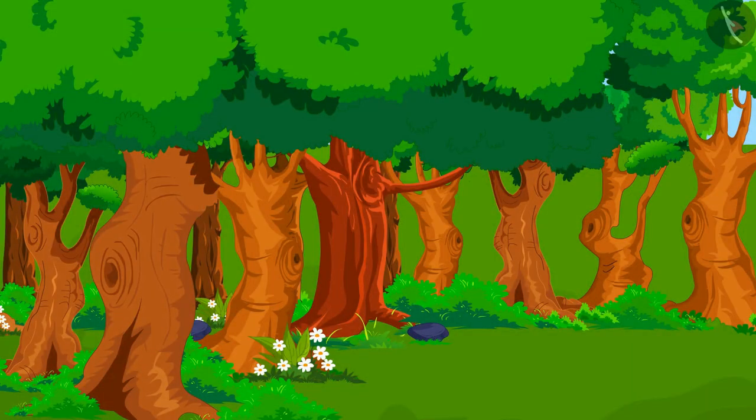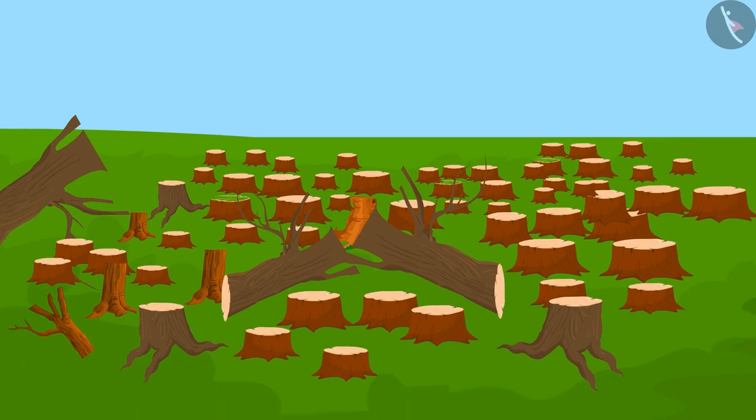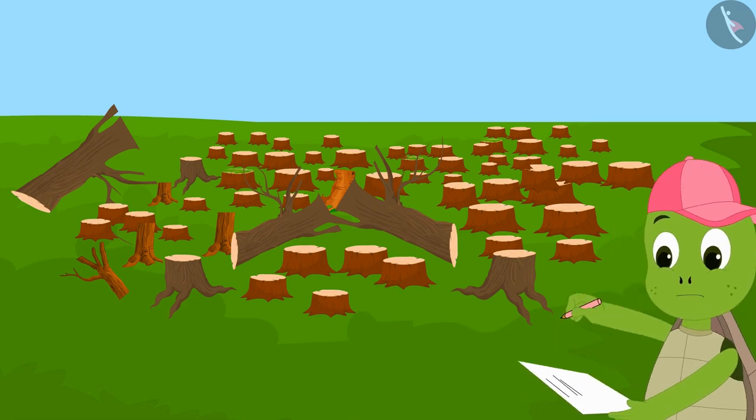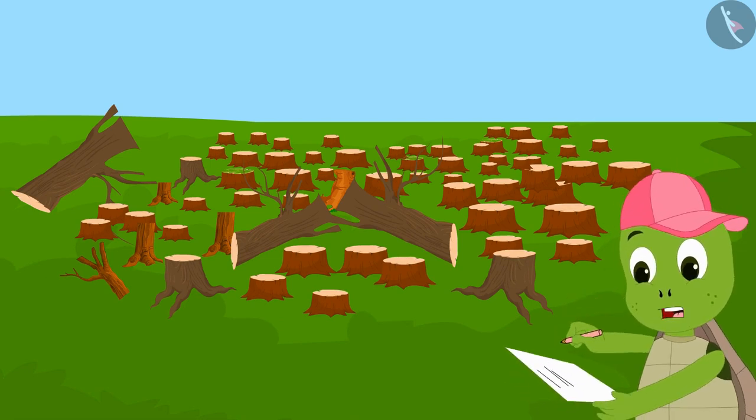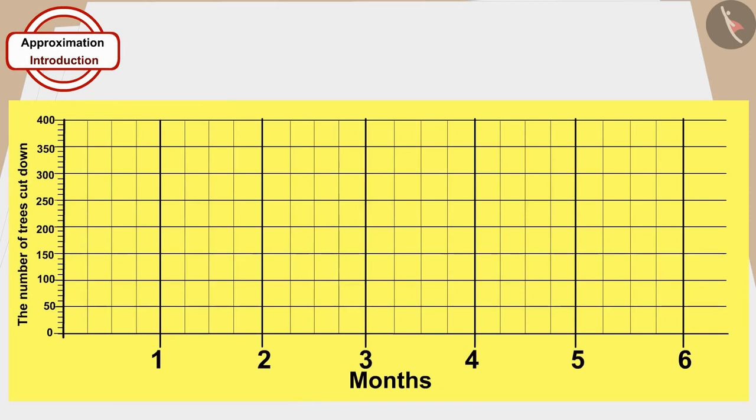A month passed and trees were still getting cut in the village. By the end of the month, he added the total number of trees cut down. Oh God! A total number of forty trees were cut this month. Let me show this by making a dot like this on this paper.